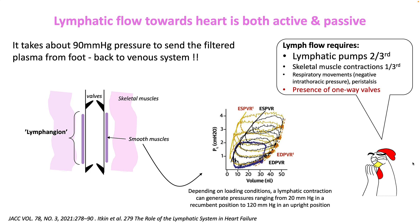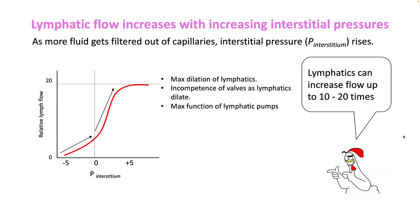The lymphangion can contract and generate a very high pressure ranging from 20 to 120 mmHg in an upright position. It takes around 90 mmHg of pressure to send filtered plasma from the foot back to the venous system when standing. As more fluid gets filtered out of the capillaries, interstitial pressure rises and this results in increased lymphatic flow. As your interstitial pressure rises and crosses 1, lymphatic flow increases dramatically. However, it peaks at around 10 to 20 times normal flow, because your lymphatic pumps can only pump so much and lymphatics can only dilate so much. As they dilate, the valves become more incompetent, so lymphatic flow does not increase beyond a certain point.